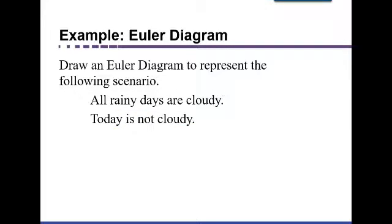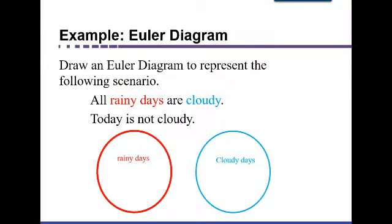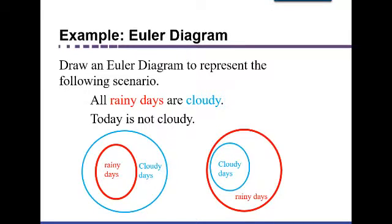To draw an Euler diagram for 'all rainy days are cloudy and today is not cloudy,' we're going to have a circle to represent rainy days and a circle to represent cloudy days, drawn such that they represent the scenario described in the statement. When you use a universal quantifier like 'all,' one of the circles is inside of the other. On the left I have the rainy day circle inside of cloudy days, and on the right the cloudy day circle inside of rainy days. Which diagram represents 'all rainy days are cloudy'?